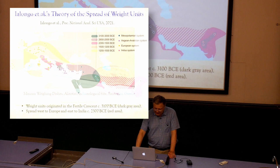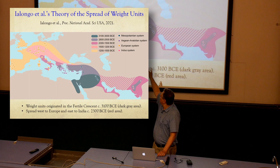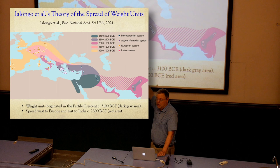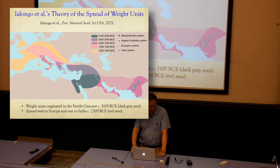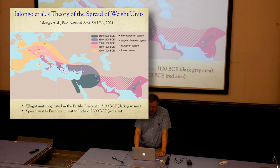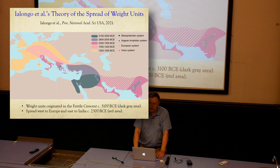According to the theory of Yolongu and others, the weight units spread from the dark gray areas — supposed to be the origin of weights — east to the Indus Valley civilization, as well as west to Crete and then the rest of Europe. This process started from 3100 BC and continued through the Bronze Age, reaching the two ends around 2300 BC.